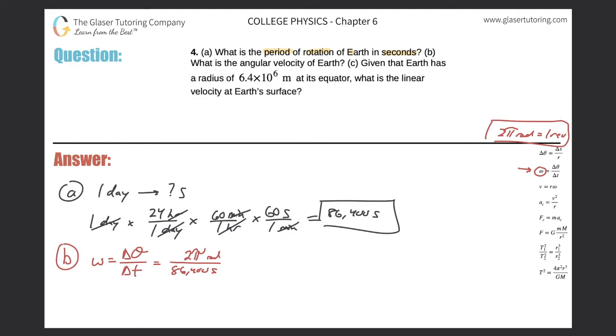So all we need to do now is take 2π and then divide it by 86,400. Okay, so here we got this value. So it rotates 7.27 times 10 to the minus 5 radians per second.